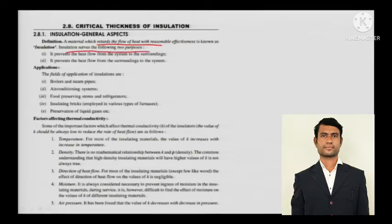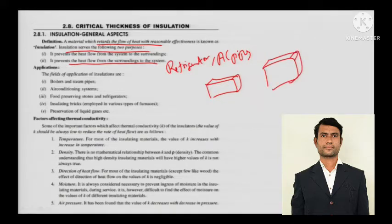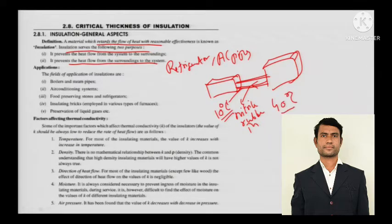First, it prevents the heat flow from the system to the surroundings. Second, it prevents the heat flow from the surroundings to the system. For example, in a split AC, the pipes connecting the condensing unit outside are covered with nitrile rubber insulation. The coil temperature reaching the evaporator is around 10°C while outside is 40°C, so heat would peep in — you don't want that, otherwise the air conditioner won't be effective.